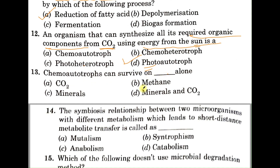Question number thirteen: chemo autotrophs can survive on what alone? A: carbon dioxide, B: methane, C: minerals, D: minerals and carbon dioxide. The correct answer is D, minerals and carbon dioxide. Carbon dioxide acts as the carbon source, and minerals act as the electron acceptor.